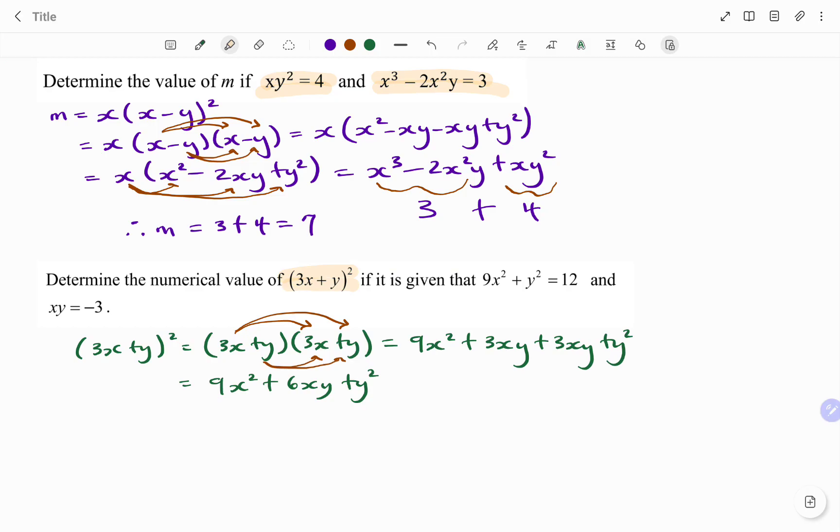If I go back to my question, I have xy is equal to negative 3, and likewise, 9x squared plus y squared equals 12. So if I group accordingly, I have 9x squared plus y squared plus 6xy. So from here, my x squared plus y squared, that's 12.